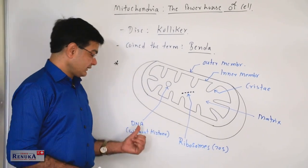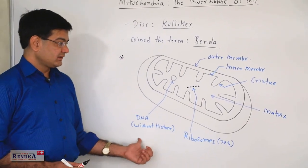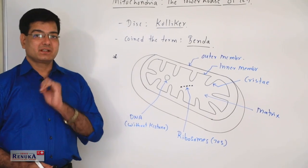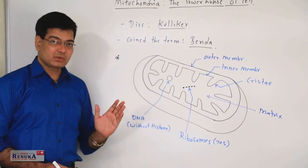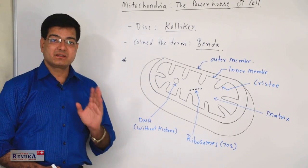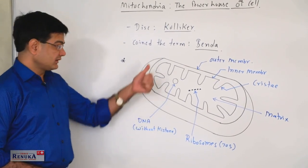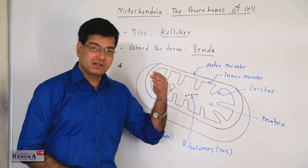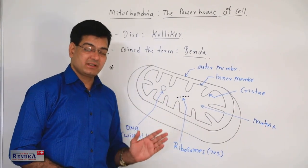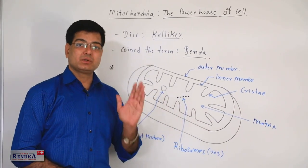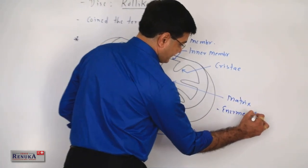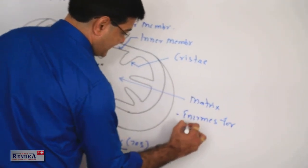Due to the presence of DNA, mitochondria is a semi-autonomous cell organelle. It undergoes division like that of bacterial binary fission, and so mitochondria can produce other mitochondria on its own — that is why it is called a semi-autonomous cell organelle.